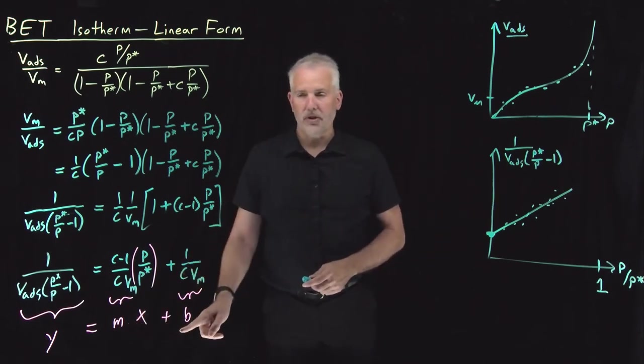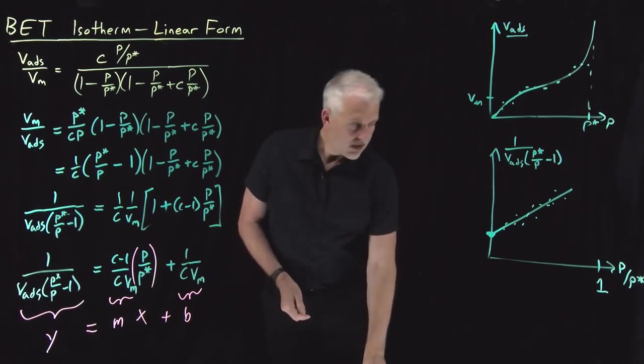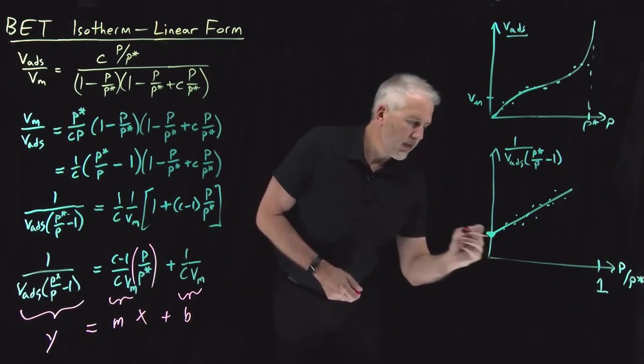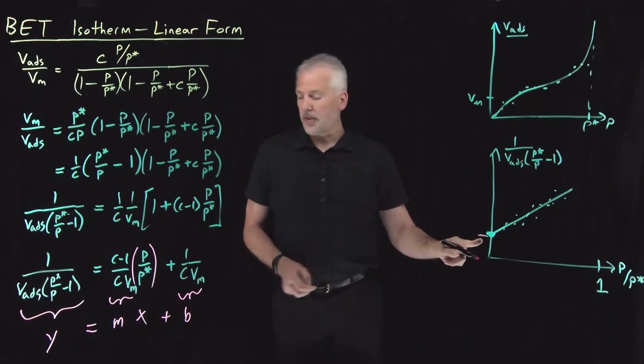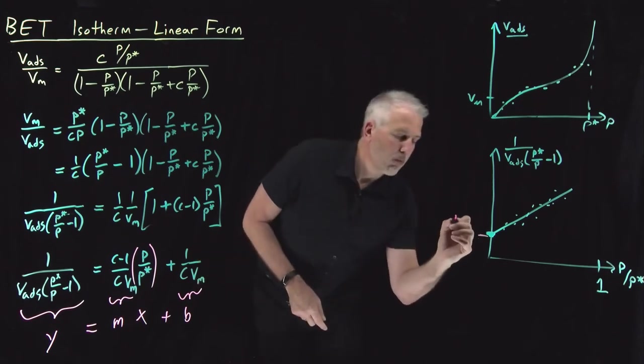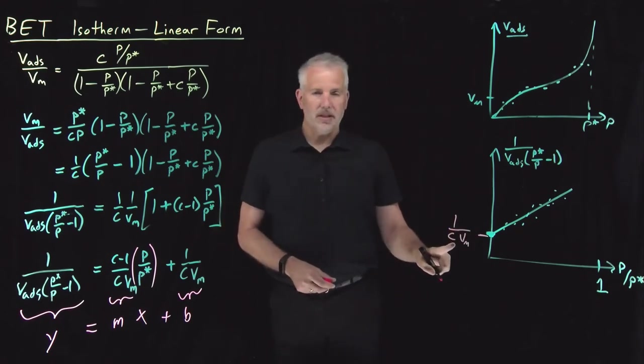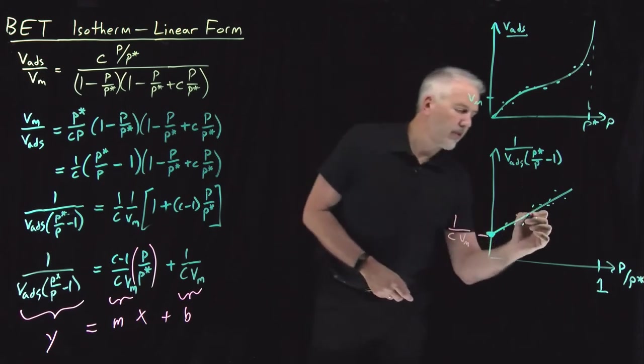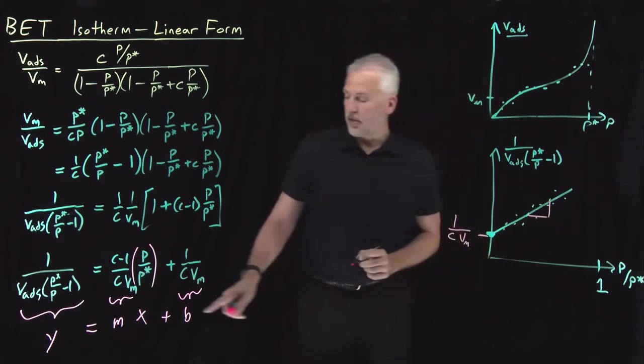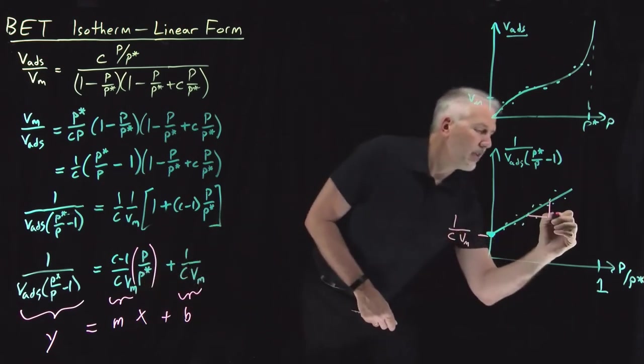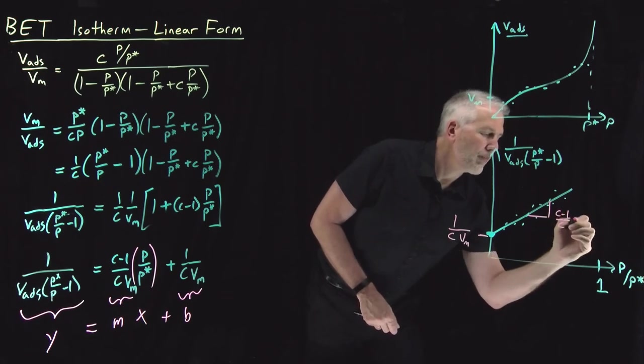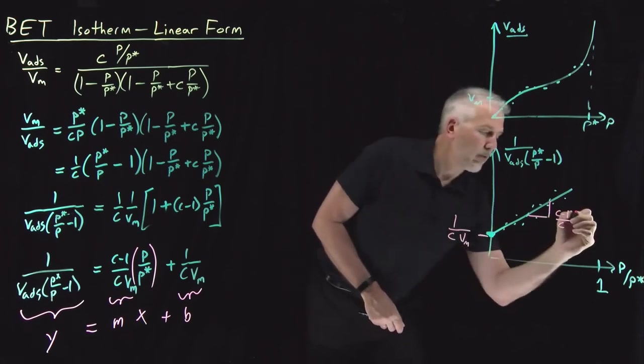It tells me the value of M. It tells me the value of B. So the intercept of this curve, this straight line, tells me the value of 1 over C Vm, 1 over the constant C times the monolayer volume of the gas. The slope of the graph, once I get it fit, the slope of the graph tells me C minus 1 over C times 1 over Vm.